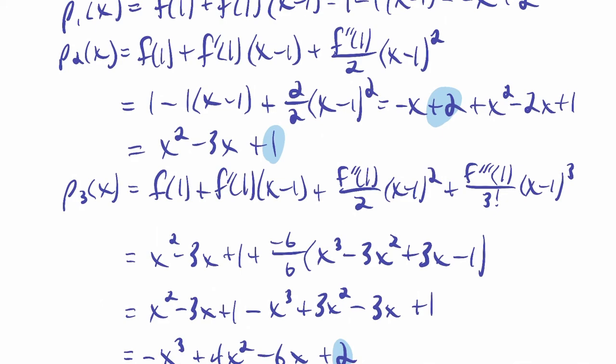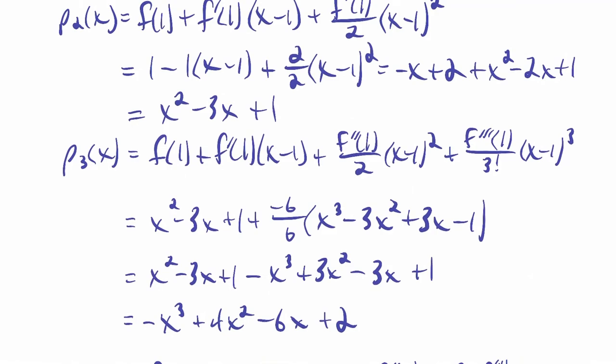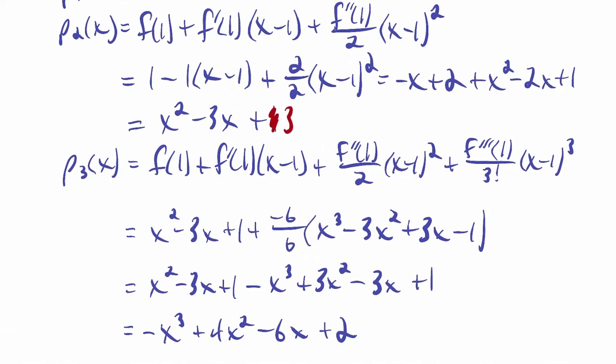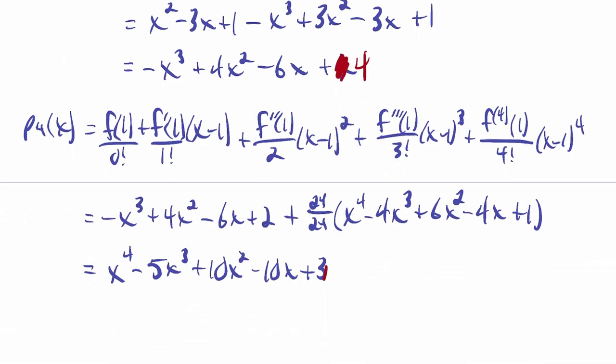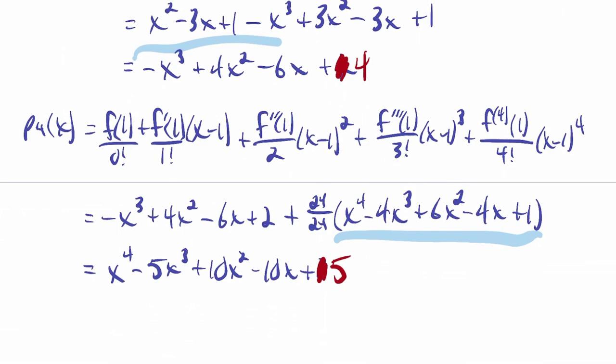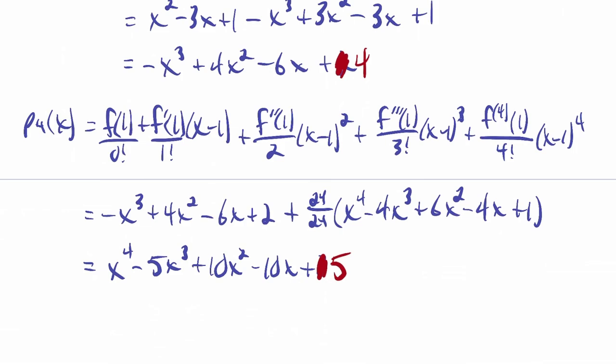I noticed a mistake — I forgot to carry the plus 2 from p3 correctly. The constant terms combine as 2 plus 1, making 3, not 1. Also, I recognized the binomial coefficient pattern 1, 4, 6, 4, 1 in the expansion, and at degree 5 it should go 1, 5, 10, 10, 5, 1. Let me go back and fix those errors accordingly.